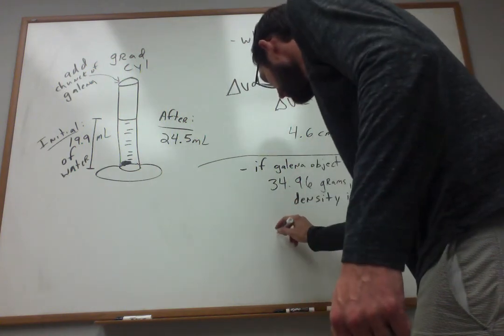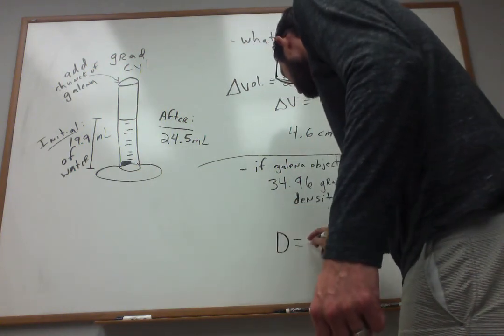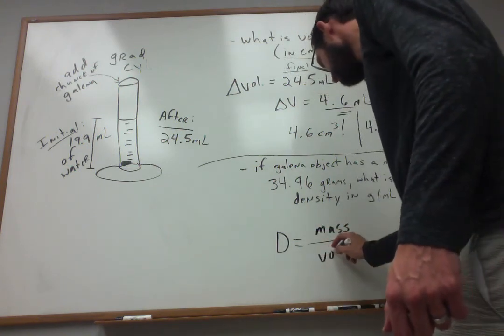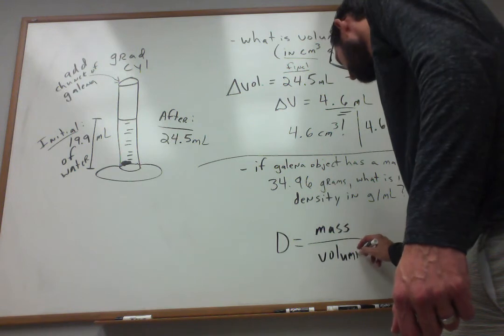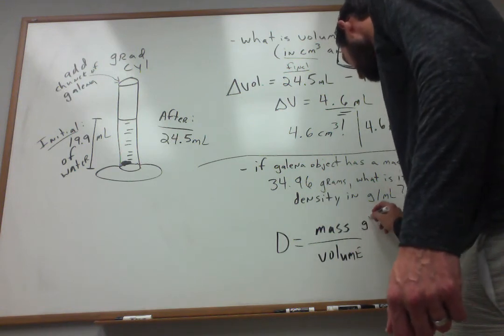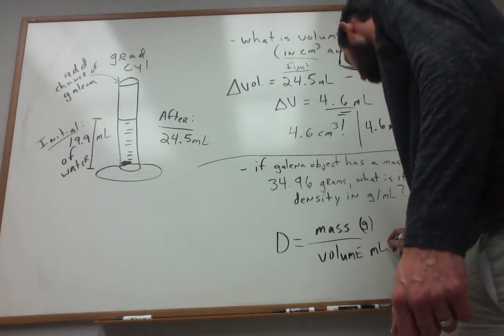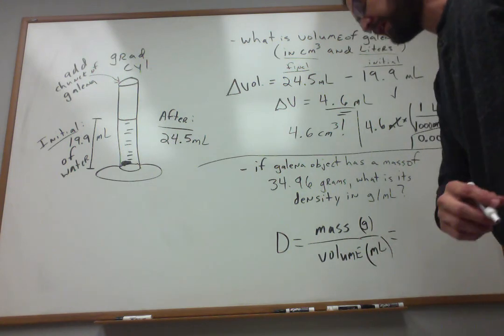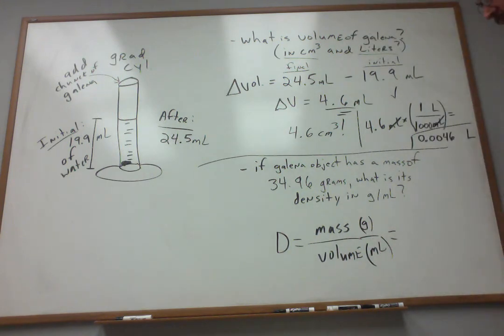And of course density, capital D, is equal to mass divided by volume. With the most common units being grams for mass and milliliters for volume. You don't have to use those units. Densities can be measured in other units. But this is the most common that we'll see in this class.